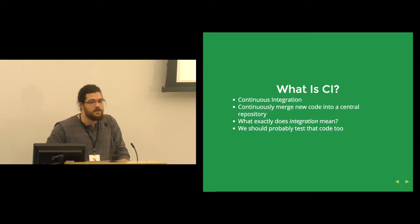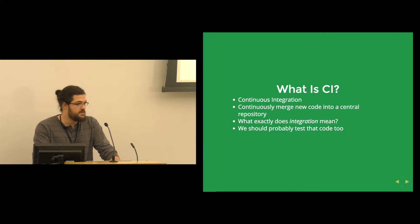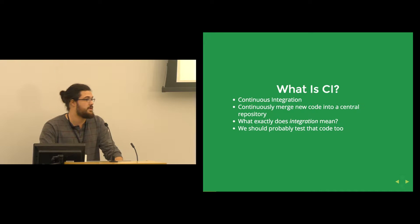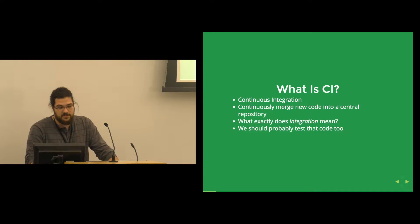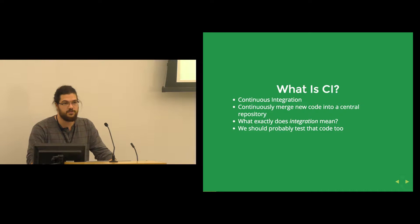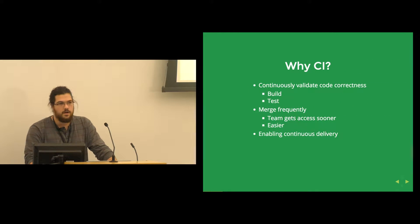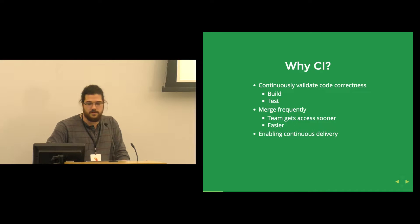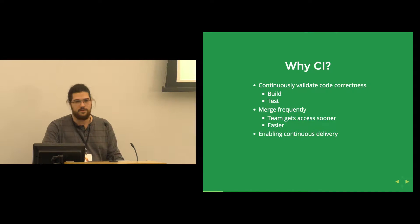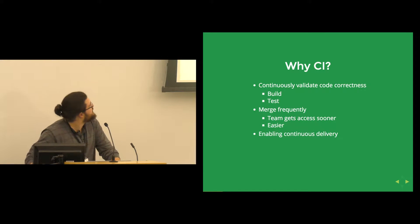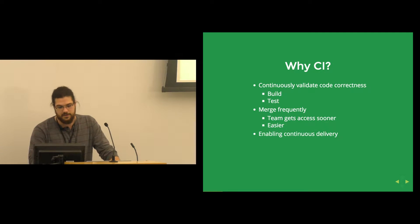What is CI? Continuous integration is what CI stands for, and what that means is that we continuously merge new code into some central repository. We have to define what exactly integration means, and we probably want to test that code as we're doing this. The reason we want to do this is to continuously validate that our code is correct, that our code acts the way we want it to, that our app has all the features we require — and we do that with two phases: we build the code and we test the code.